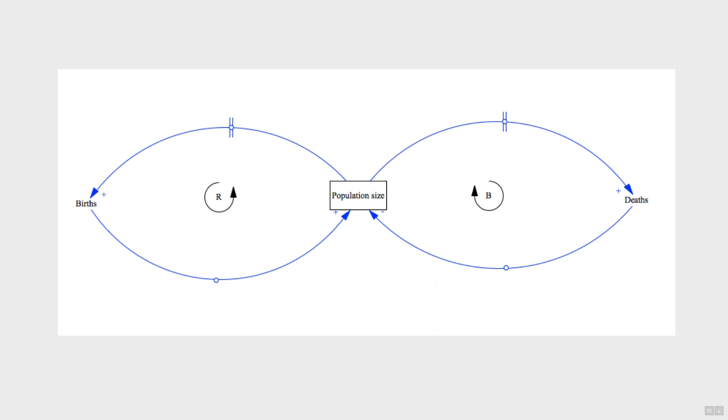Let's recap the components one more time for you. Stock variables can accumulate over time, such as population size. Flow variables, such as births and deaths, do not accumulate over time, but change flows through them.